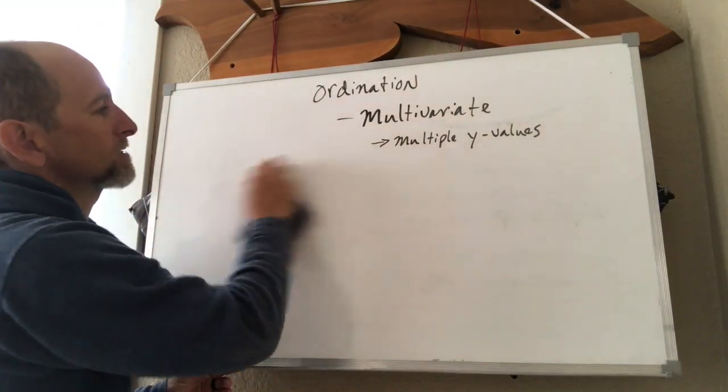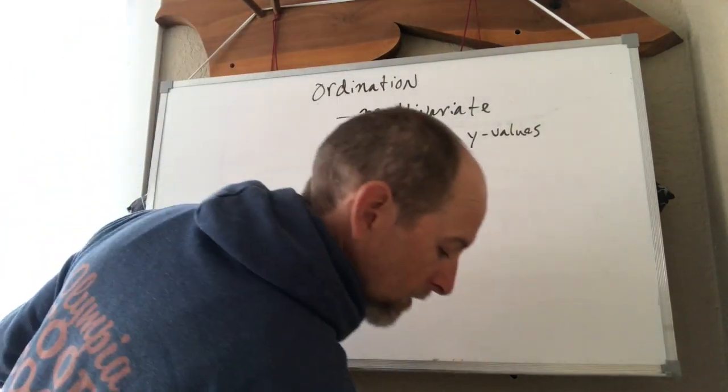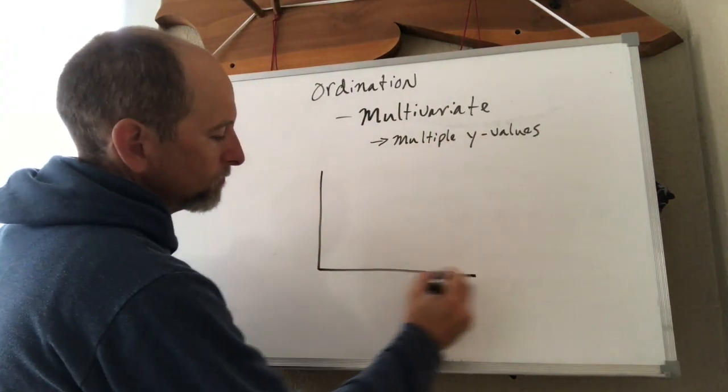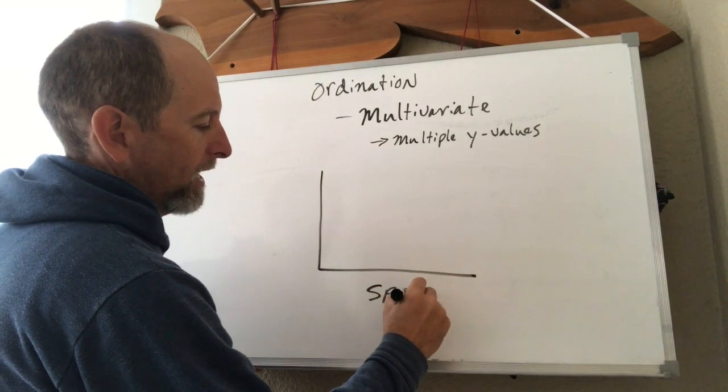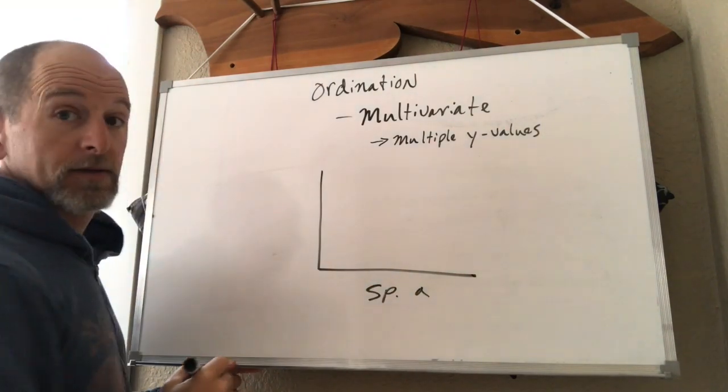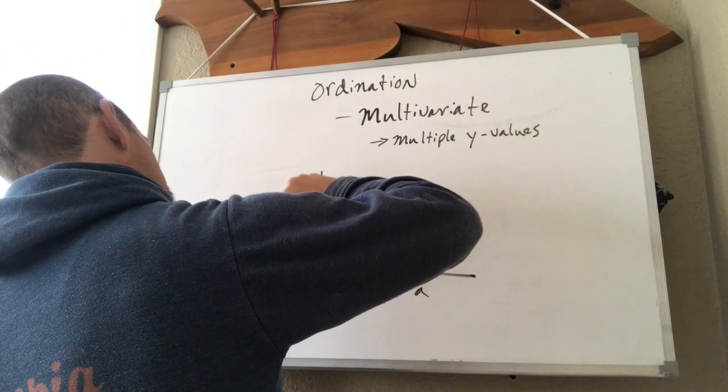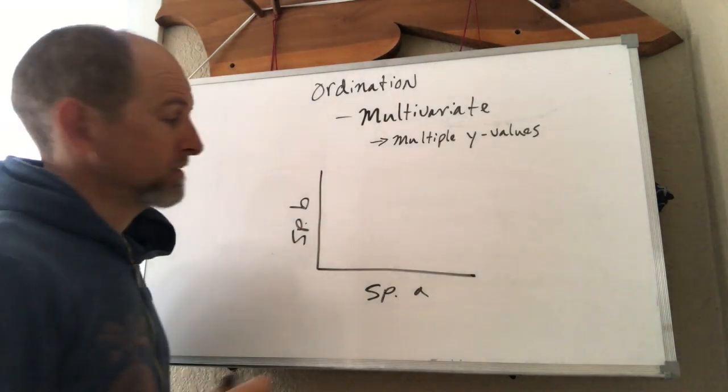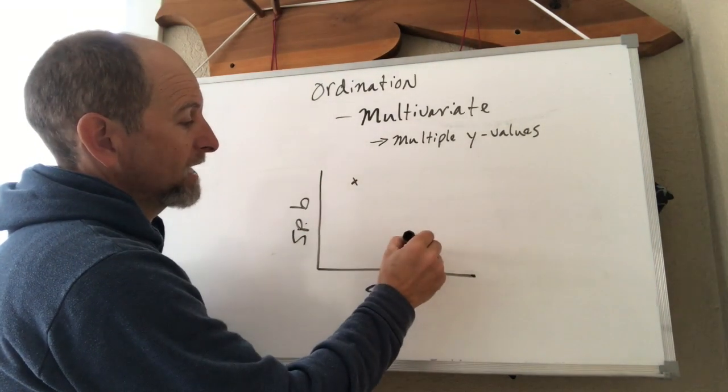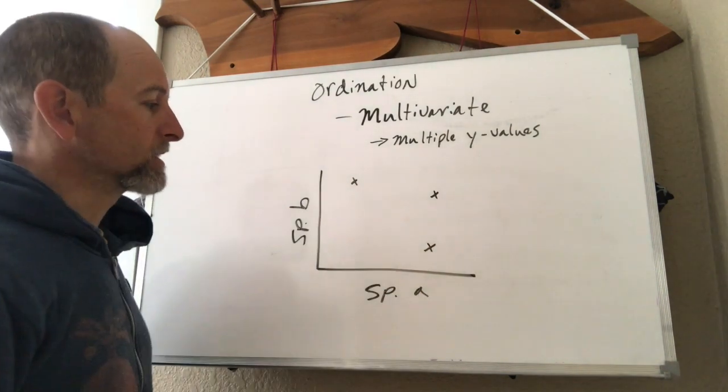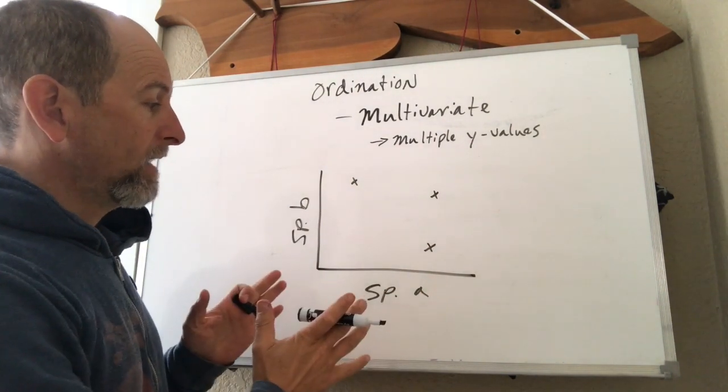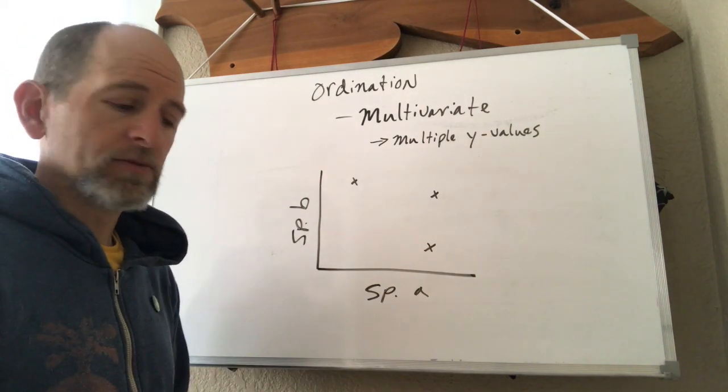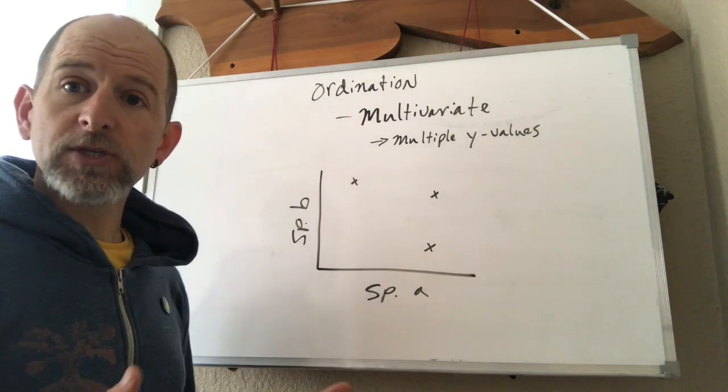So for more on this, let's look at a graph. Now, if I have a simple graph where I put species A on the x-axis and I put species B on the y-axis, when I go out and sample a number of communities, let's say I have three communities here, then we can explain on this one graph how the community differs in terms of species A and species B at the same time.